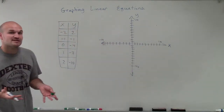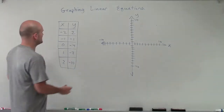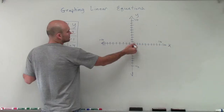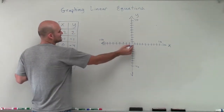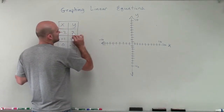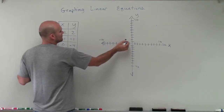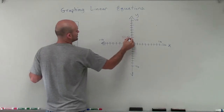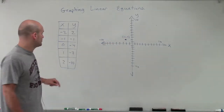So when graphing by using a table, especially a linear equation, remember we're going to create a line. All I'm going to do is plot these points. Negative 2 means I'm going to go negative 2 units in the left direction on the x-axis, and then I have a positive 2, which means I'm going to go up 2 units on the y-axis. So that'll be my first point, which would be negative 2, 2.